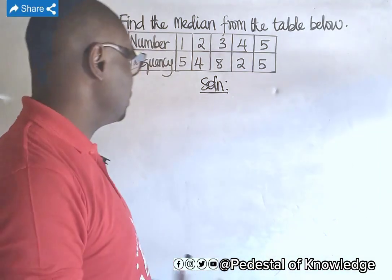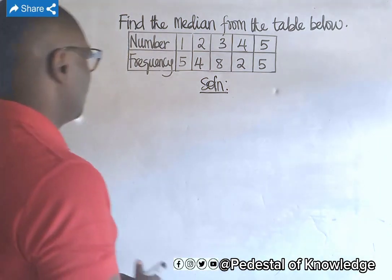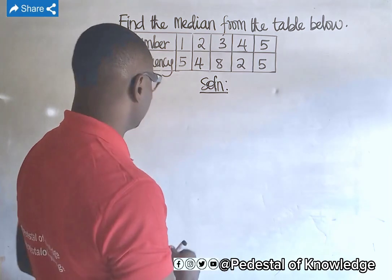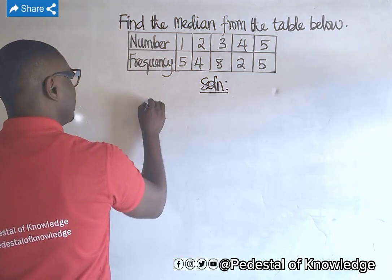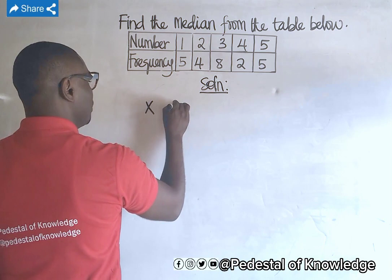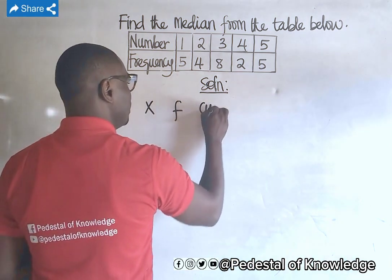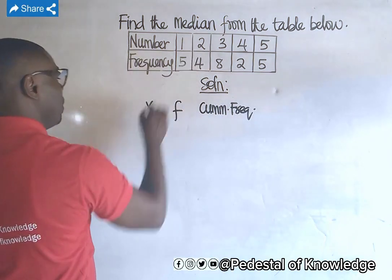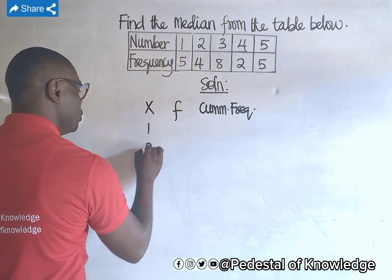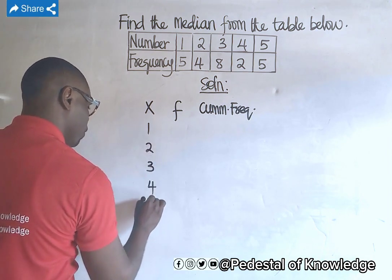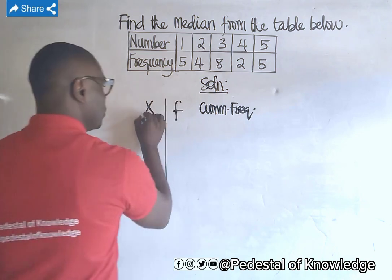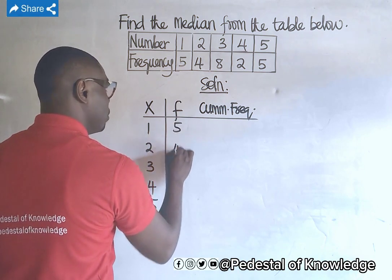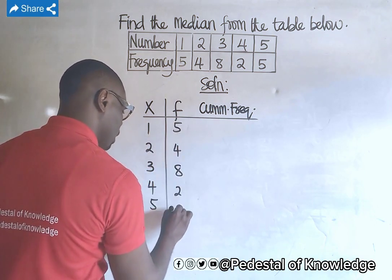Hello guys, let's find the median of this frequency distribution. Now what we need to do is compute a cumulative frequency table for this statistical distribution. We have the number x, we have the frequency f, and we have the cumulative frequency. Now the numbers are one, two, three, four, five, and the frequencies are five, four, eight, two, and five.